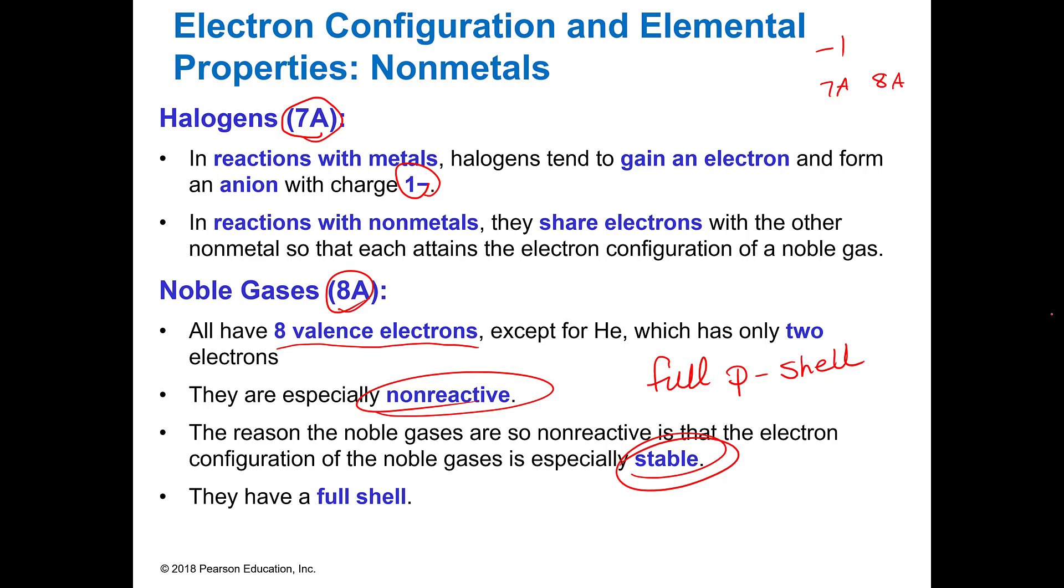We used to call them the inert gases which means they wouldn't have any type of reaction. But now we call them noble gases because we can make them participate in reactions. Your halogens are like your chlorine, bromine, iodine, those going down that group. And you're going to see those in almost every reaction that occurs. They're very very reactive.